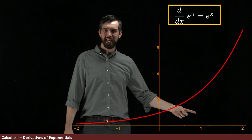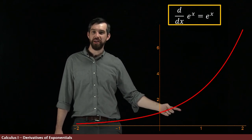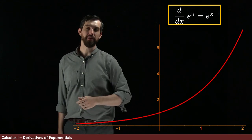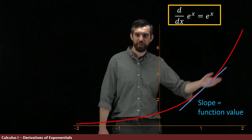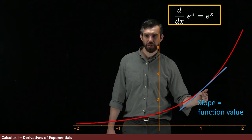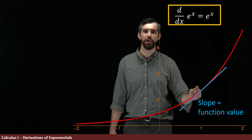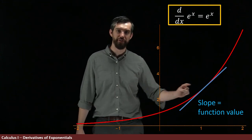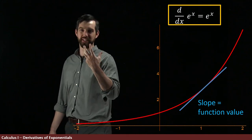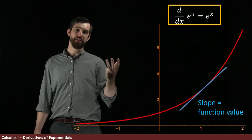If I take a point like one here, e to the one has the value e. If I figure out what the slope is at this point, the height looks like a little bit over two—that's basically the value of e. The slope of this particular function and the function value are the same.